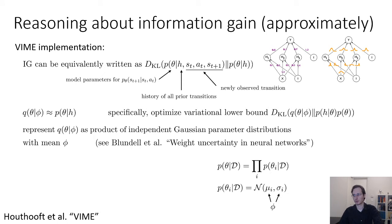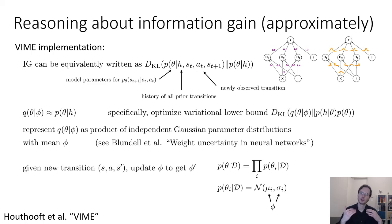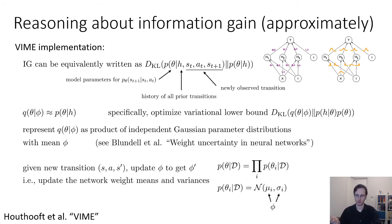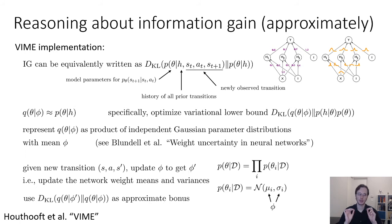One very simple method we could use, also referenced in the model-based RL slides, is the method by Blundell et al. called Weight Uncertainty in Neural Networks, which describes an algorithm called Bayes-by-backprop — a variational inference method for Bayesian neural nets that uses the reparameterization trick. When we're given a new transition (s, a, s'), we update φ to get φ'. We minimize the KL divergence objective again with the new transition appended, giving us two φ parameters — the old one before the transition and the new one after — which both define distributions over parameters, so we can compute a KL divergence between them.